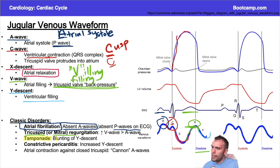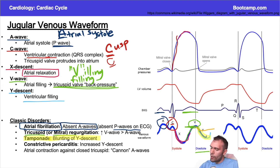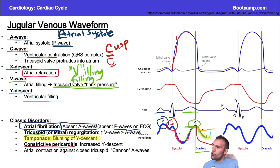In cardiac tamponade, there is blunting of the Y descent because it's very difficult for the atria to relax — so the Y descent appears very shallow. In constrictive pericarditis, however, the constricting pressure on the lower-pressure chambers causes blood to leave the atrium much faster, producing a steep, prominent Y descent — it looks quite different from tamponade.